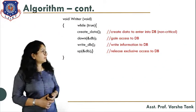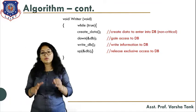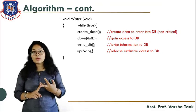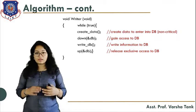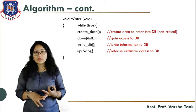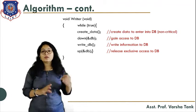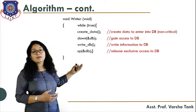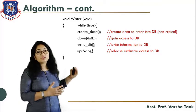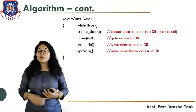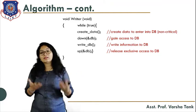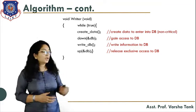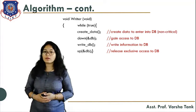On the writer side: while the writer wants to write, it first creates the data in the non-critical section, then does `down(db)` to gain access to the database, writes the information to the database, and then does `up(db)`. When the writer does up(db), any reader process can get access to the database. These are the steps followed on the writer side — this is the algorithm for the Reader-Writer problem.